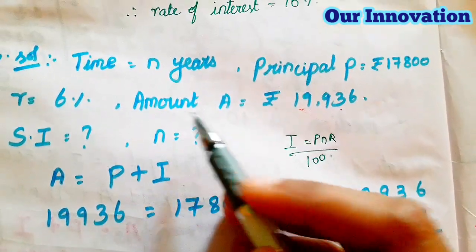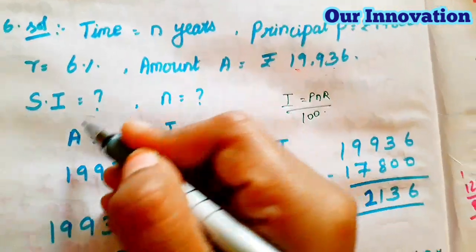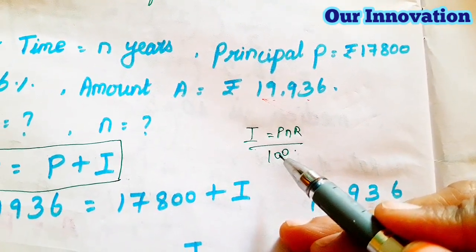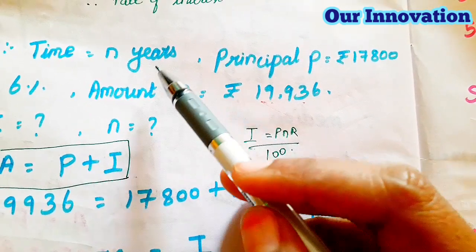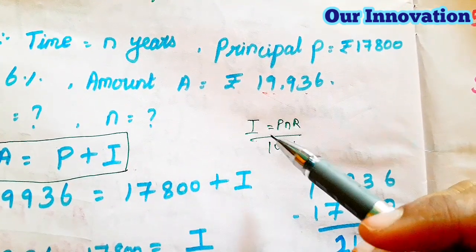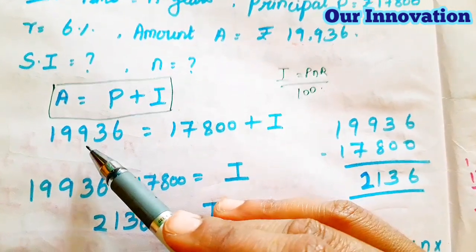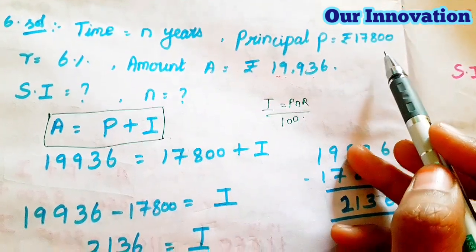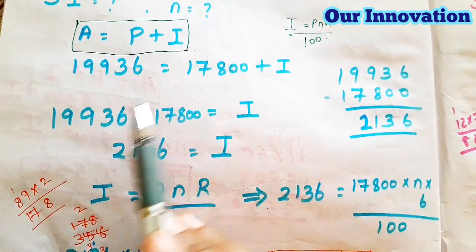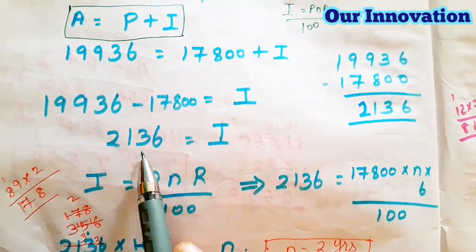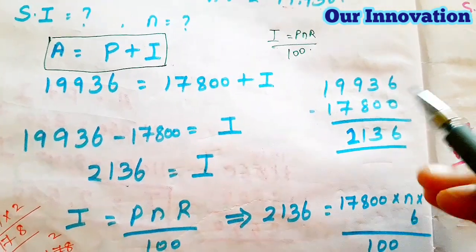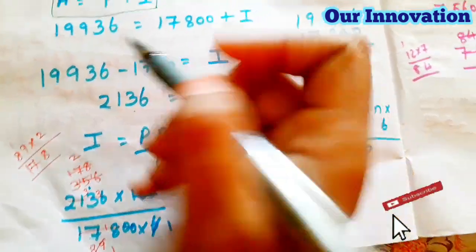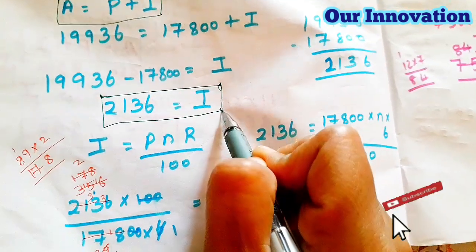We have both the amount and the principal, so this formula is easier to use. Amount A is ₹19,936 and principal P is ₹17,800. Subtracting, we get: I = 19,936 − 17,800 = ₹2,136.